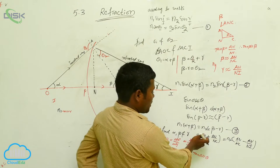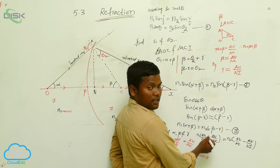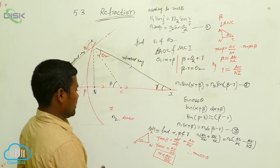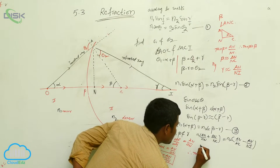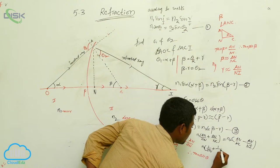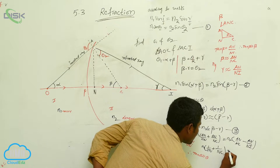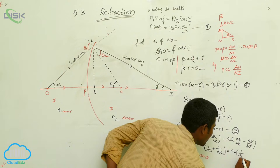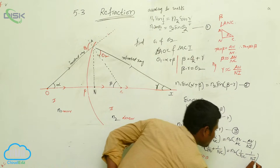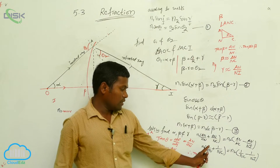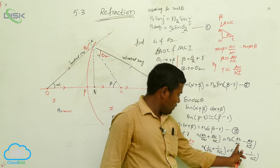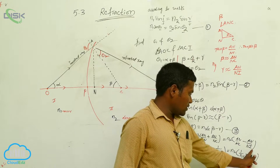Now, can I take a common term here? AN is common throughout. Taking AN as the common factor: N1 times AN into (1/ON + 1/NC) equals N2 times AN into (1/NC minus 1/NI). So finally: N1 times (1/ON + 1/NC) equals N2 times (1/NC minus 1/NI).